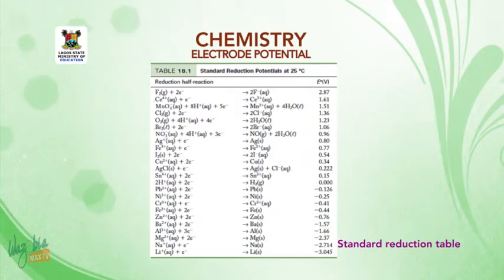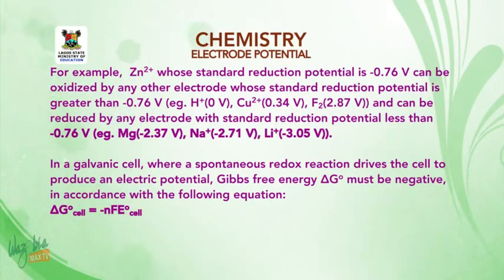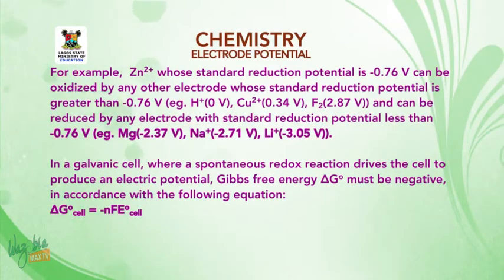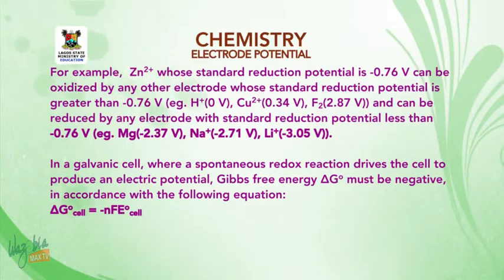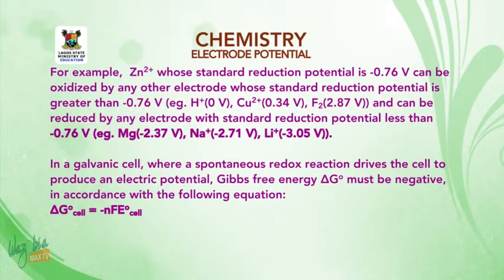For example, zinc ion with a standard reduction potential of −0.76 volts can be oxidized by any electrode whose standard reduction potential is greater than −0.76 volts, such as hydrogen ion (0 volts), Cu²⁺ (+0.34 volts), and F₂ (+2.87 volts). It can also be reduced by any electrode with standard reduction potential less than −0.76 volts, for example magnesium (−2.37 volts), sodium (−2.71 volts), and lithium (−3.05 volts).